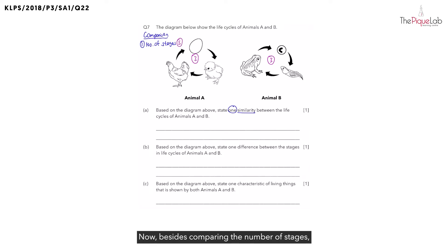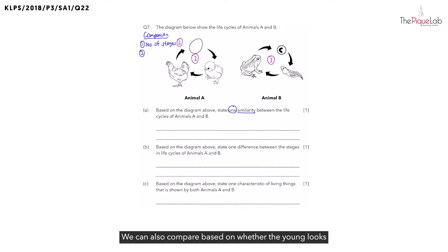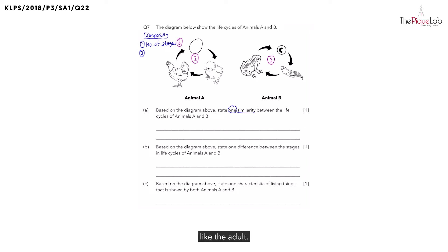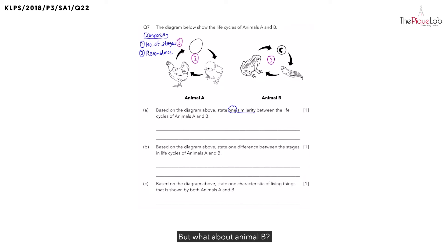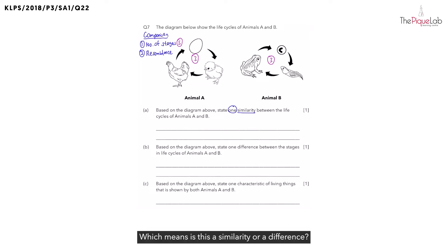Besides comparing the number of stages, what is another way we can compare? We can also compare based on whether the young looks like the adult. Whenever we compare whether the young looks like the adult, we call this the resemblance. Taking a look at animal A, does the young resemble the adult? Definitely. But what about animal B? Does the young of animal B resemble the adult? No. Which means, is this a similarity or a difference? This will be a difference between them.